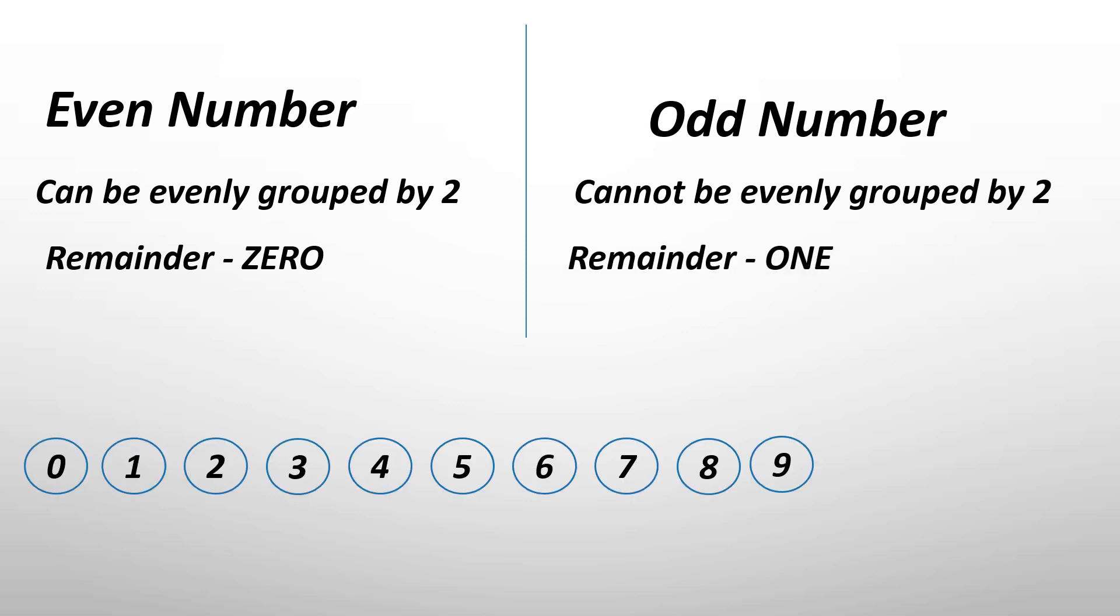So let's see where all the numbers from zero to nine go into sections. One goes in the odd section because the remainder is one. Two goes in the even section because two can be evenly grouped by two and the remainder will be zero.